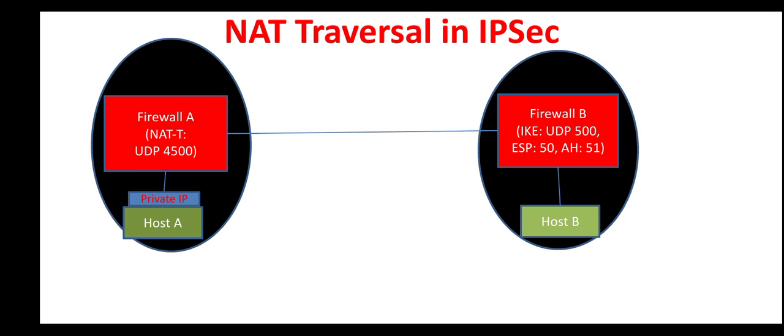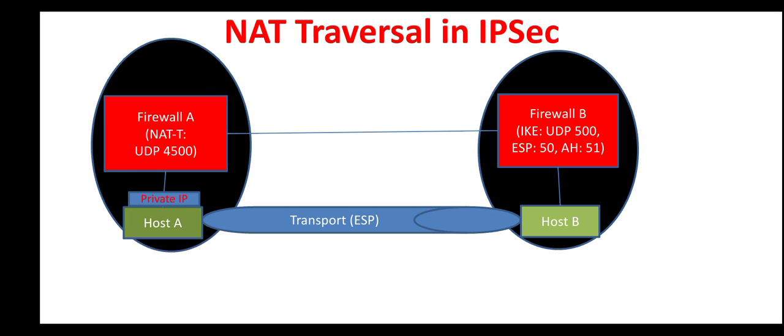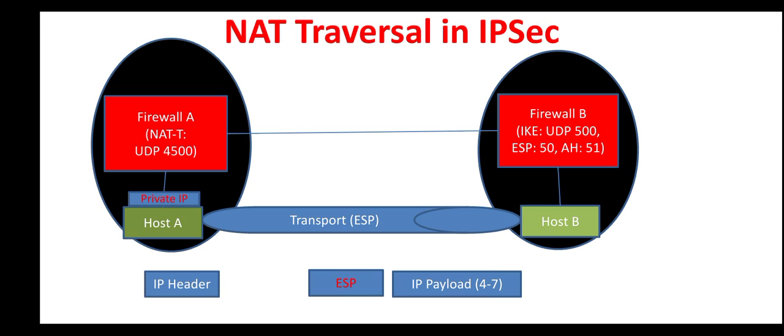To establish an end-to-end tunnel between these two hosts we use IPsec in transport mode. The Encapsulating Security Payload or ESP header is inserted into the IP packet. The IP payload — which is the data from layer 4 through layer 7, the transport through application layer — is encrypted by the ESP header, while the IP header at layer 3 is excluded. The ESP header does not touch the IP header; it only encrypts the IP payload.